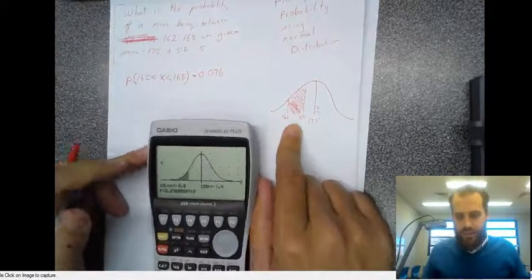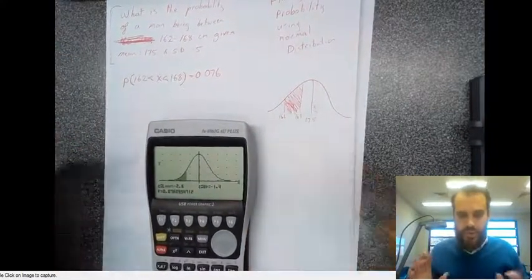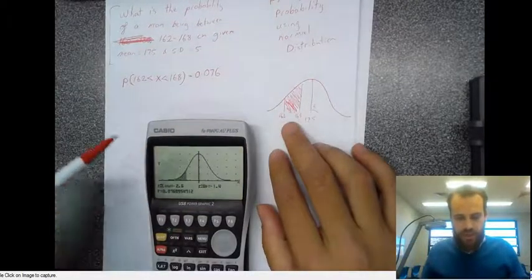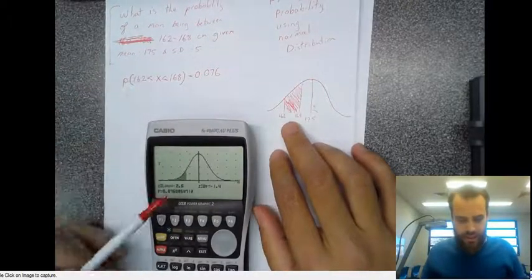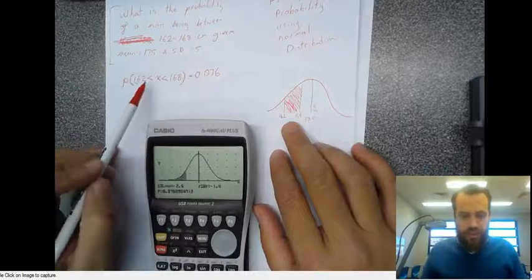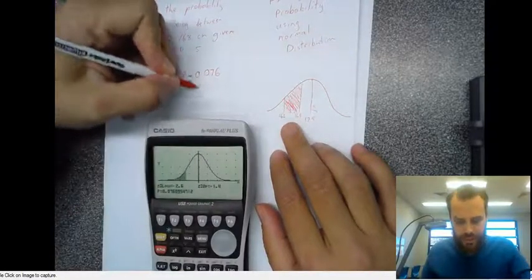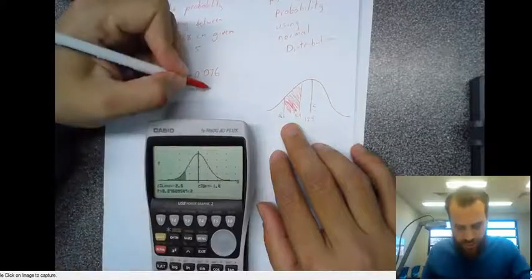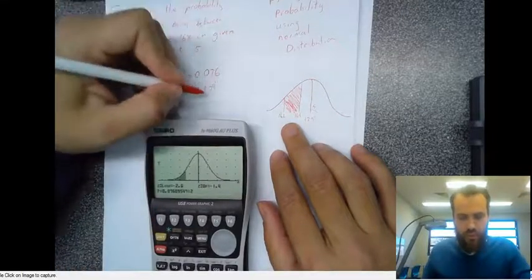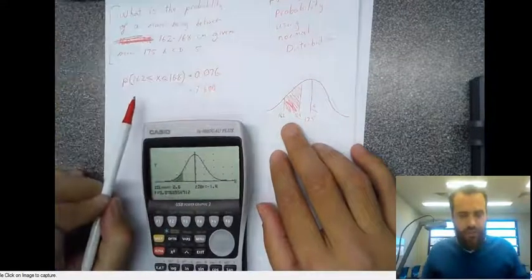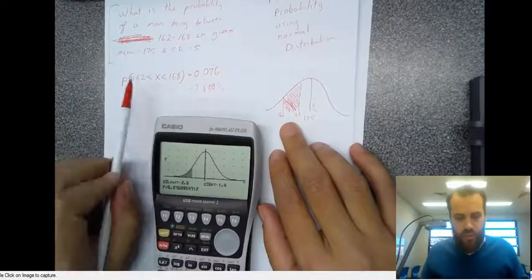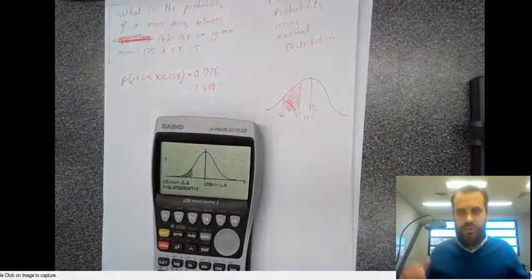So there is a 7.6% probability that if you walk up to any individual, given the information that we have here, that they will be between 162 and 168 centimetres tall. There's a 7.6% chance, 7.609%, that they'll be between 162 and 168 centimetres tall.